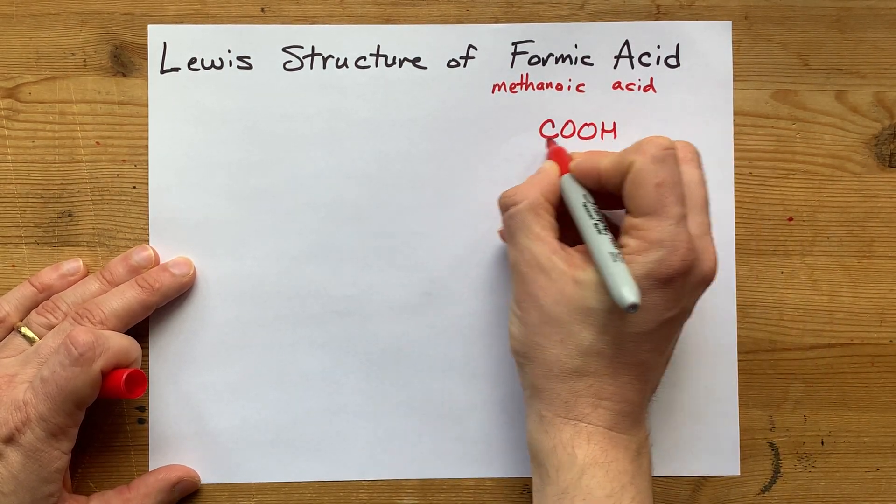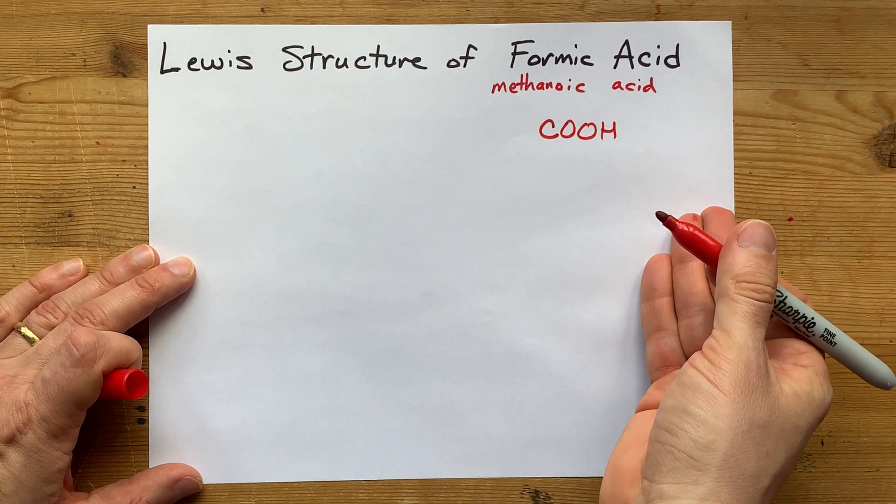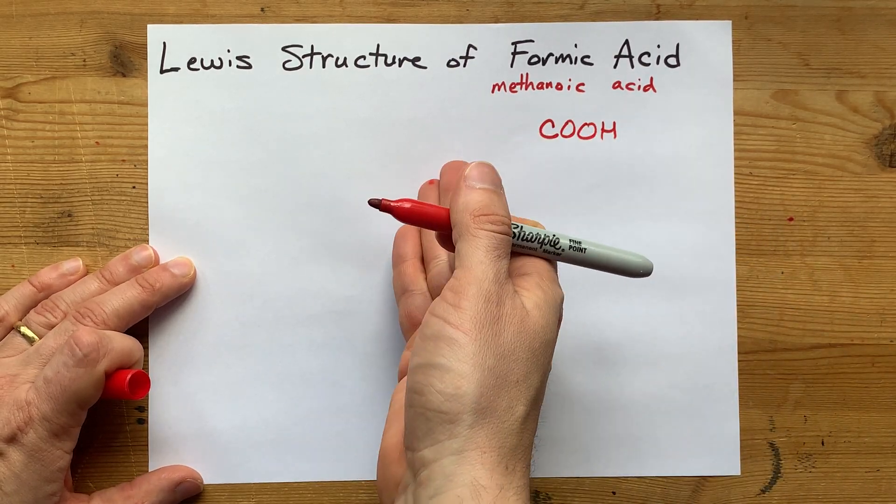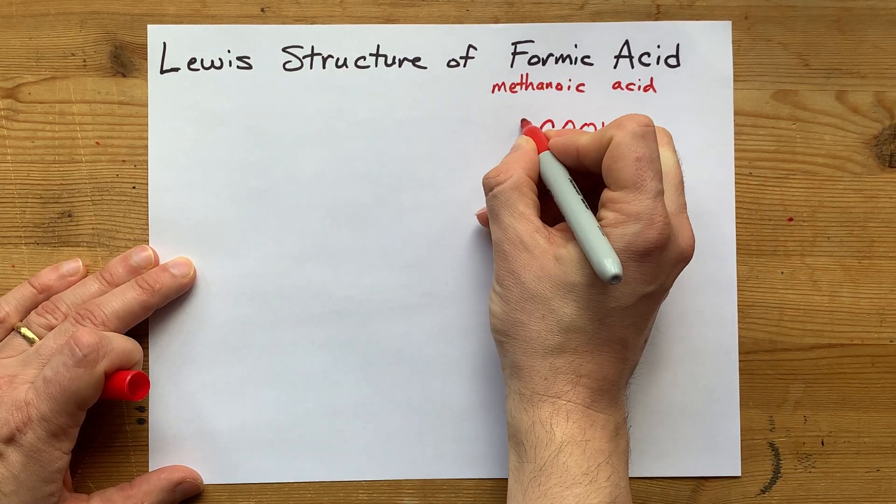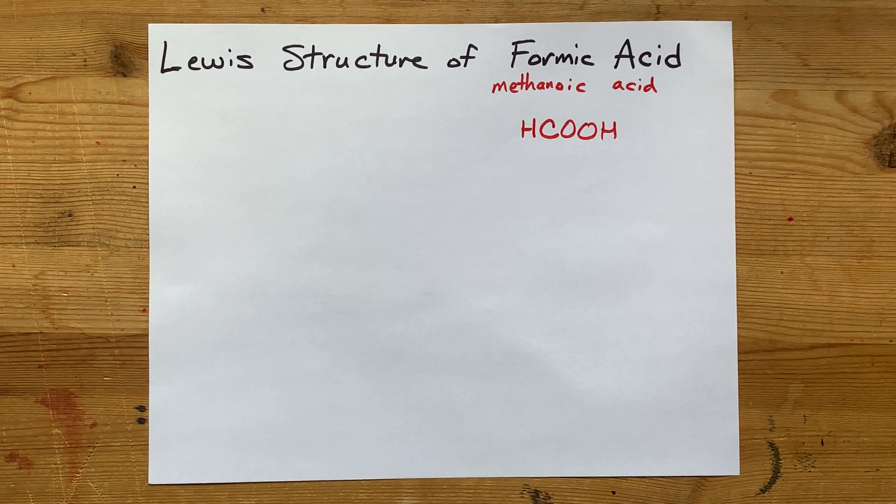That's going to be COOH, that's the carboxylic acid part. And then there's no other carbons because it's a one carbon chain. So it's just a single H at the end of the chain there.